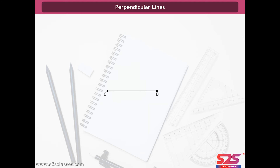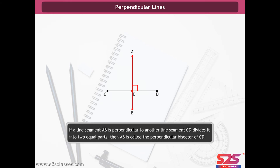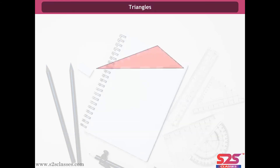This is the symbol we use for perpendicular lines. If a line segment AB is perpendicular to CD, it also means that CD is perpendicular to AB. Consider a line segment CD. Mark the midpoint of CD as E. Take a line segment AB which is perpendicular to CD and passes through E. This line segment AB bisects CD at E, the midpoint of CD. So we call AB the perpendicular bisector of CD. Hence, if AB is perpendicular to CD and divides it into two equal parts, then AB is called the perpendicular bisector of CD.